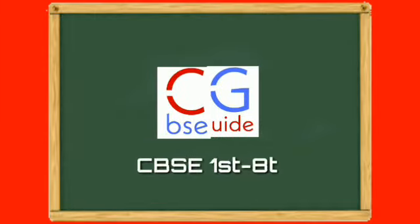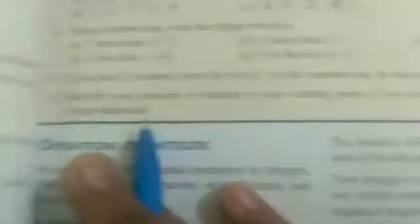Our first question is: if you move three numbers from the left of 1 on the number line, at what integer will you reach? So if we move three numbers from 1 to the left, we go 1 to 0, 0 to -1, -1 to -2. So moving three times on the number line from the left of 1, we reach -2. And -2 is our answer.